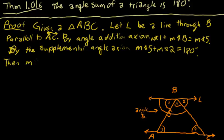Then measure of angle 1 plus measure of angle B plus measure of angle 2 equals 180 degrees. All we've done is substitute something out there. And we can say that—actually, let's spell this out.